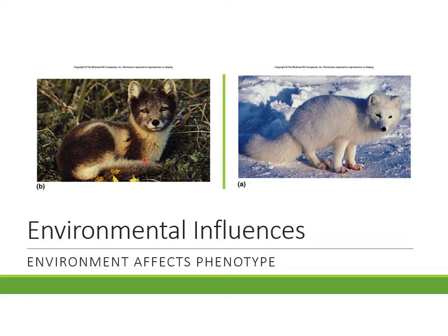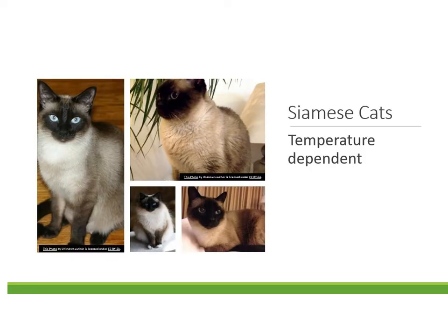For example, a fox shows darker colors in warmer weather and lighter color in colder temperatures. Another example is the Siamese cat, whose coloring is also dependent upon temperature. When the cat is developing in its mother's womb, the warmest part of its body — the middle section — is lighter, while the outermost, coldest regions show the dark color.